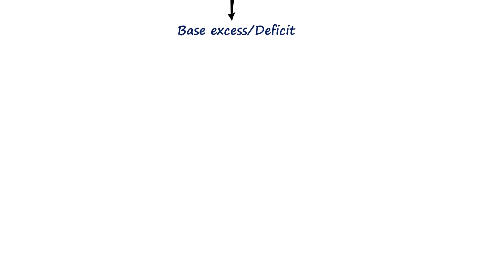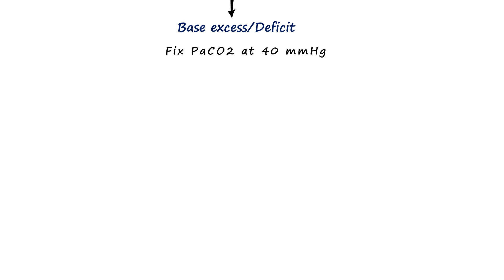Now, how do we isolate the true metabolic disturbance? Because at any given point, the bicarbonate value we get is the result of the combined effect of both components. We do this by artificially setting pCO2 to 40 mmHg, or normal, making the respiratory component constant. For this, we use this equation.